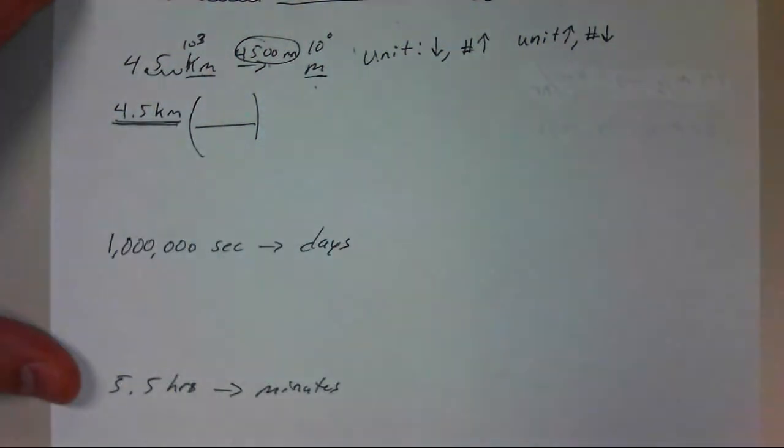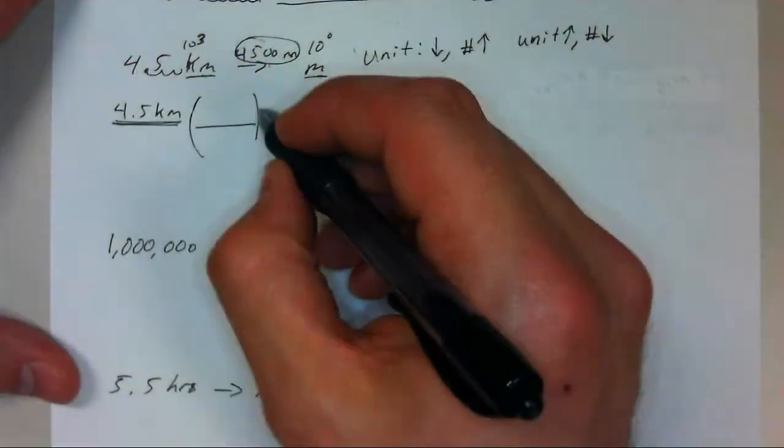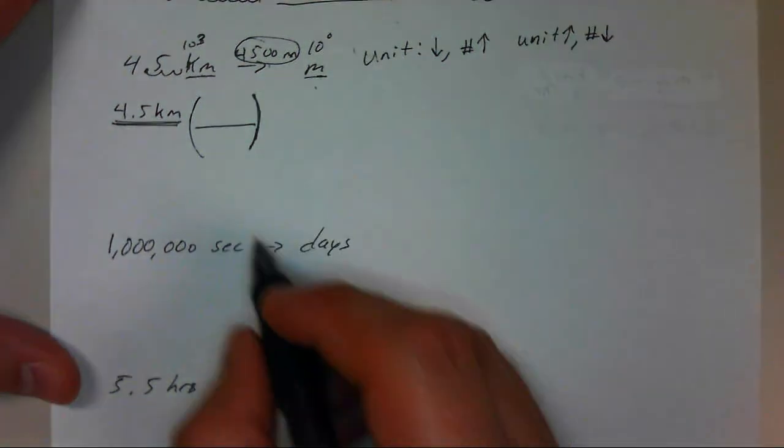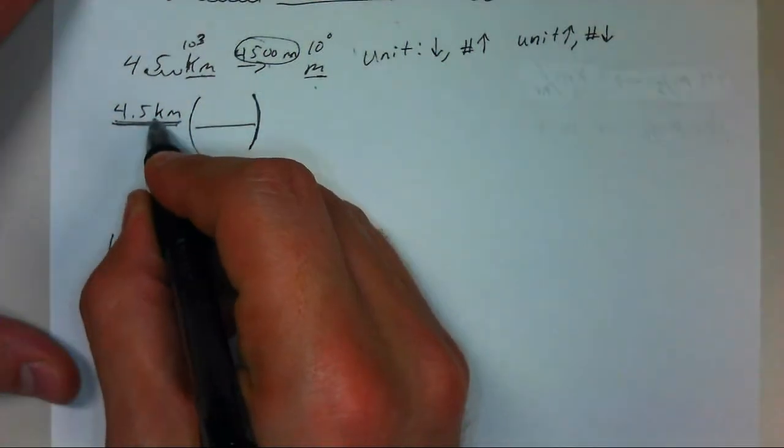We want to keep the same amount. We want to keep 4.5 kilometers the same amount. We want to multiply it by something equal to 1. In addition to that, we want to get rid of this kilometers.